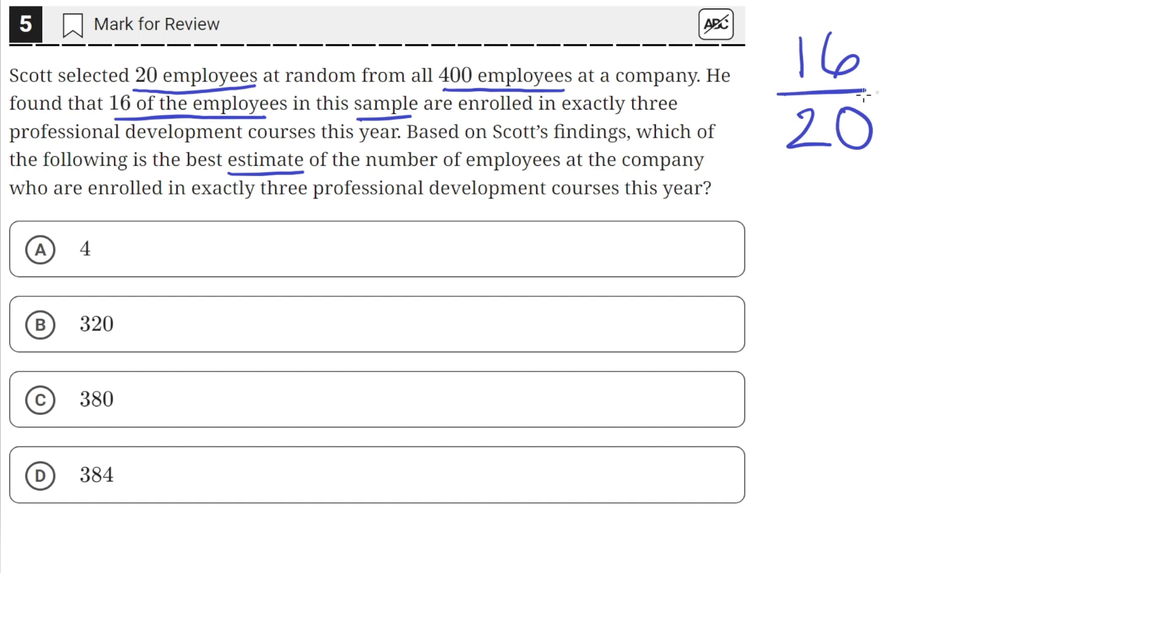So 16 over 20 represents the fraction of the sample that were enrolled in the three professional development courses. 16 over 20 is equal to 8 over 10.